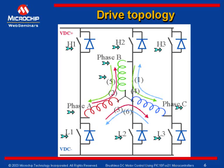H1, H2, H3 are connected to the positive DC bus or power supply, and L1, L2, L3 are connected to DC minus or the return path.